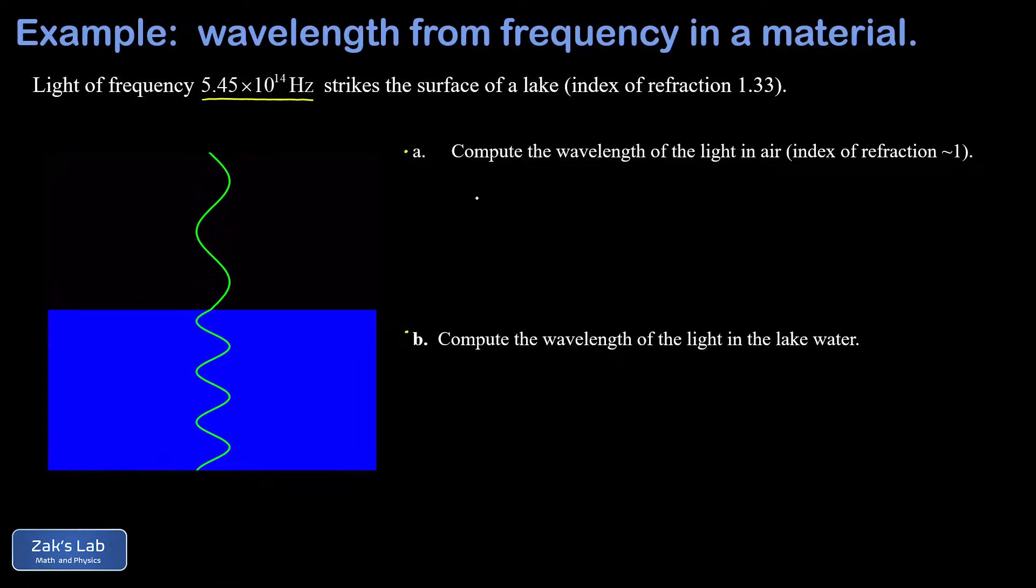First, to get the wavelength of the light in air, we relate speed, frequency, and wavelength with c equals f lambda, where c is the speed of light, about 3 times 10 to the 8 meters per second. We have the frequency, so we can solve for the wavelength. That's just the speed of light divided by the frequency, and we plug the numbers in.